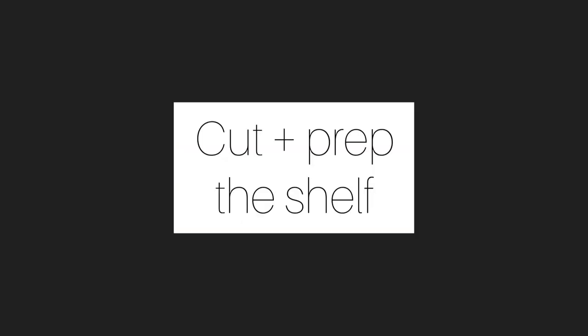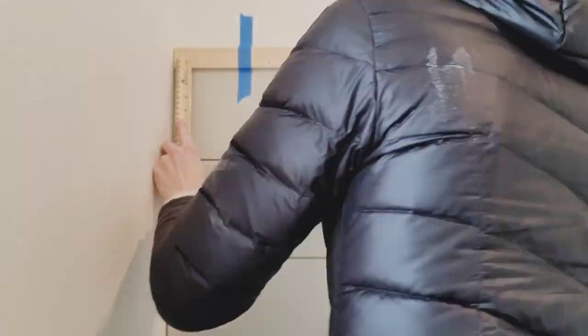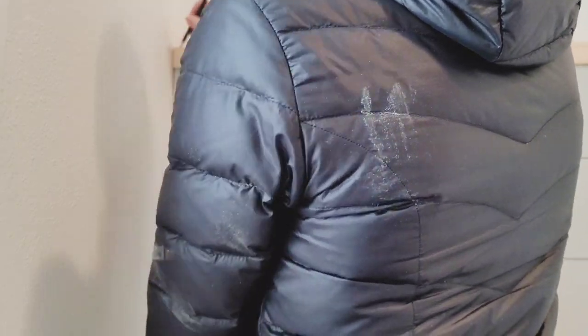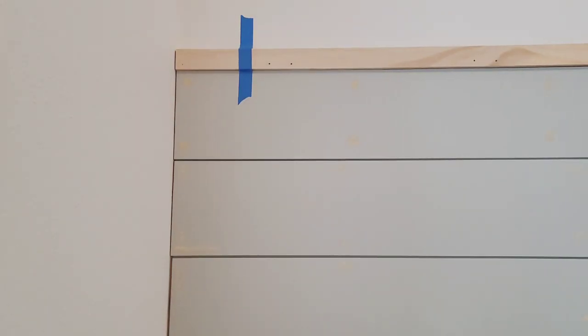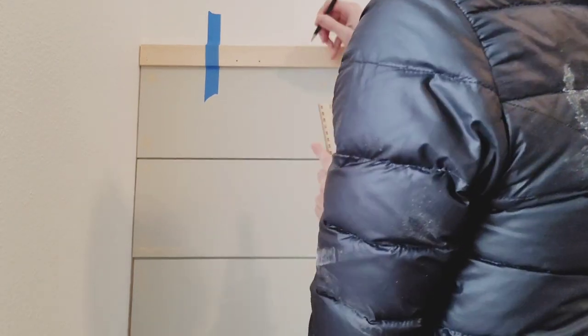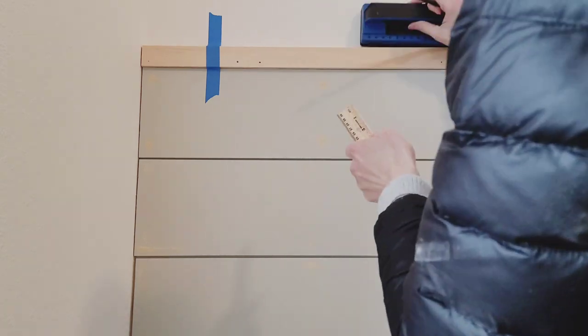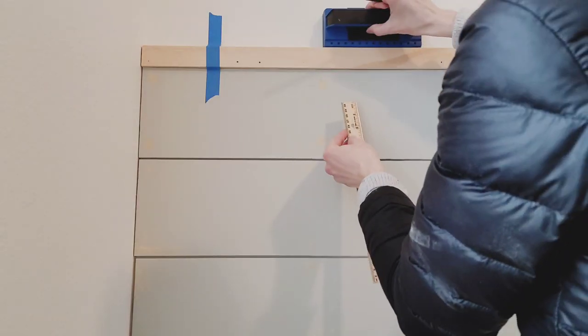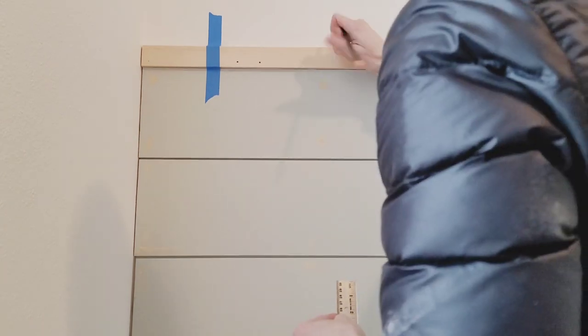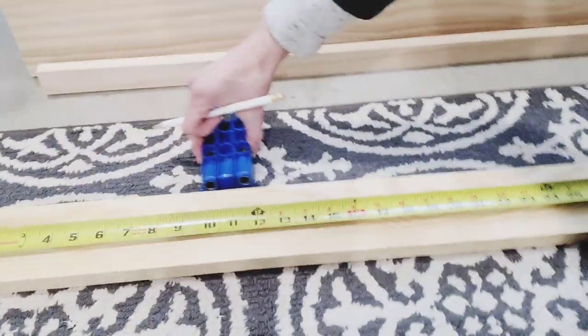I also used a vacuum and a microfiber washcloth. Then you want to go ahead and cut your one by two pine boards, and I just used some painters tape to secure it. That's when I marked my studs. I'm going to go ahead and pre-drill the stud holes, and my shelf will cover up those holes perfectly, so it will be seamless. I'm making sure that they're a quarter of an inch from the bottom.